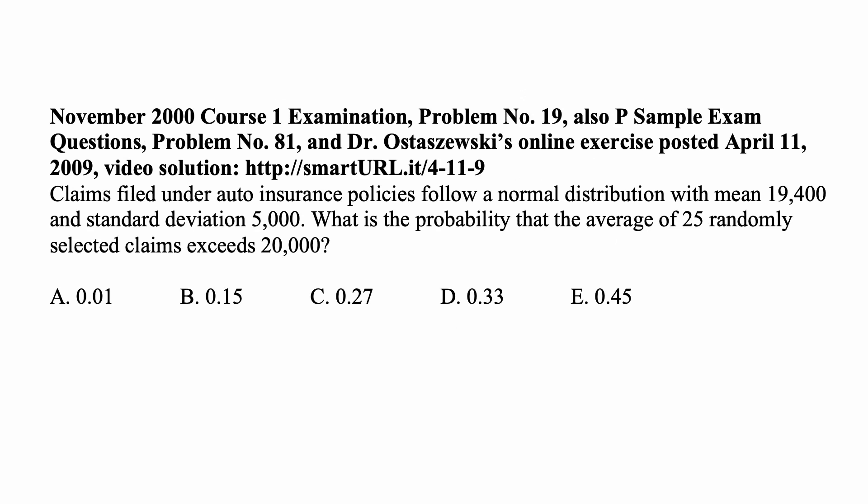Here's a problem for today for exam P. Claims filed under auto insurance policies follow a normal distribution with mean 19,400 and standard deviation 5,000. What is the probability that the average of 25 randomly selected claims exceeds 20,000? This is clearly a probability problem for exam P.